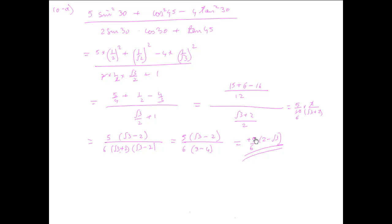For a sum like this, for substitution of all values correctly you get one mark, for simplification you get one mark, and for rationalizing correctly till the final answer you get one mark. That's three marks for a sum like this. Let's see the next question.